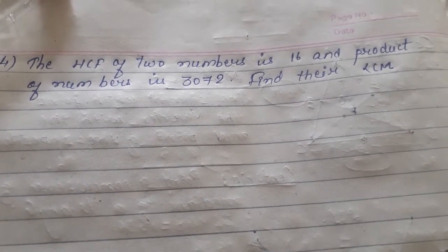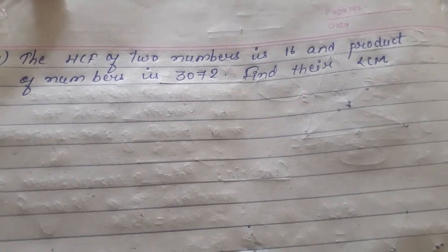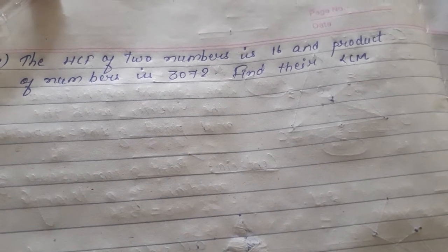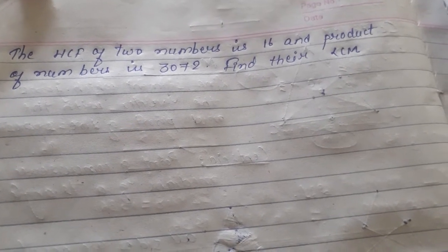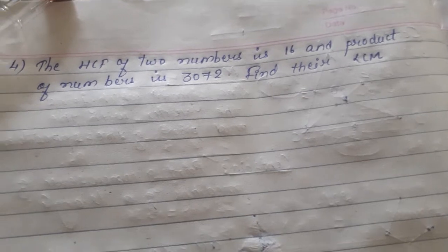Kids, this is a question. The HCF of two numbers is 16 and product of numbers is 3072.